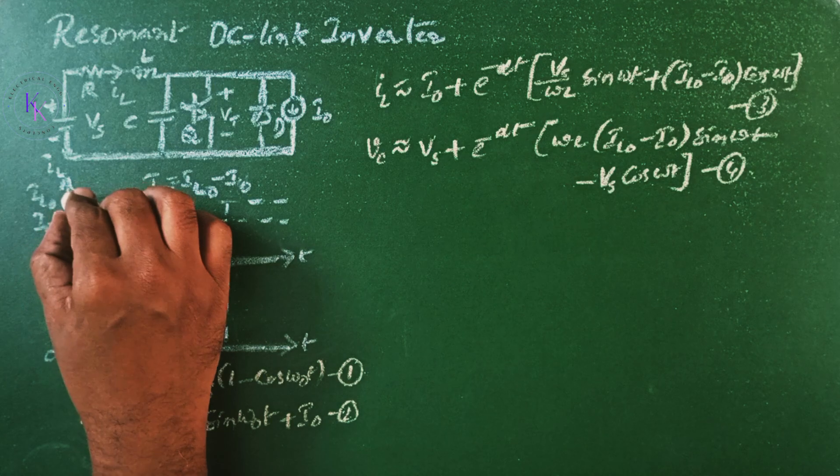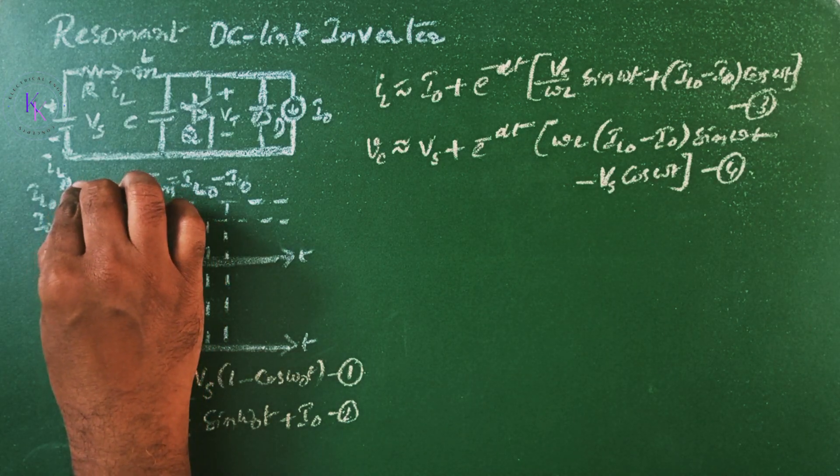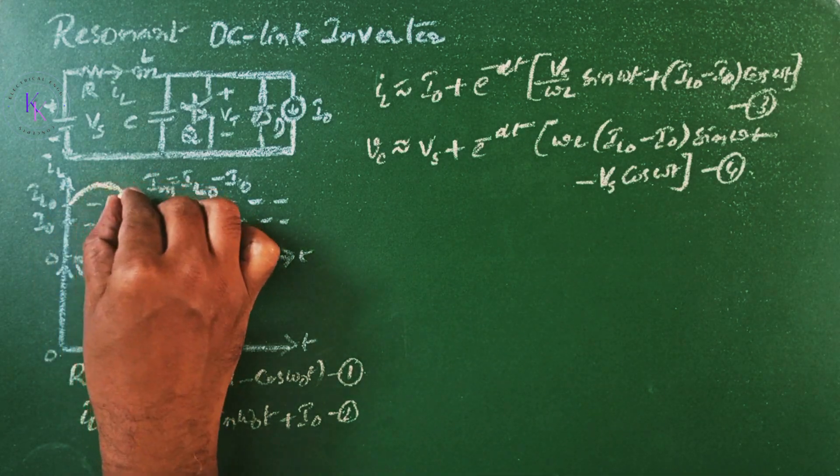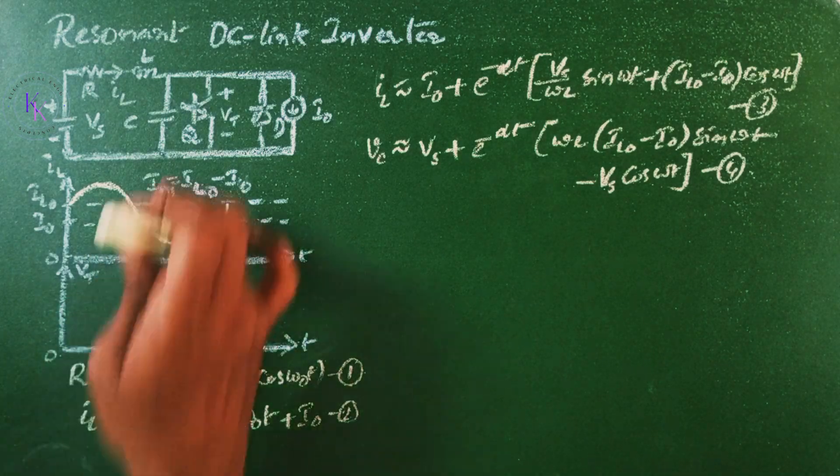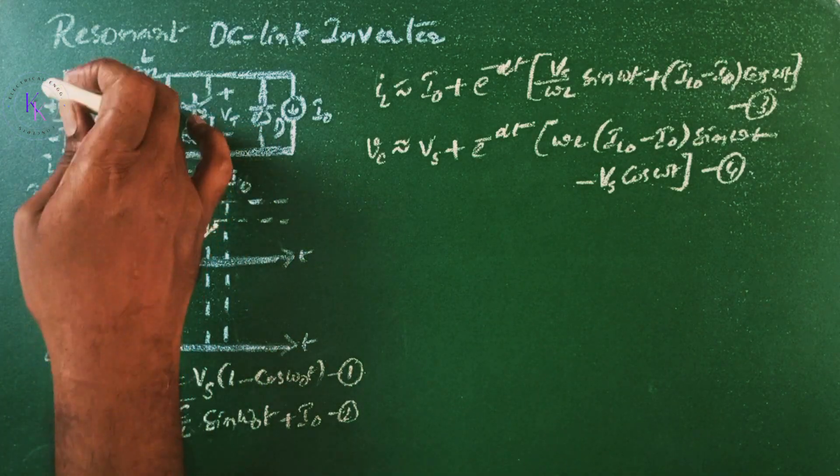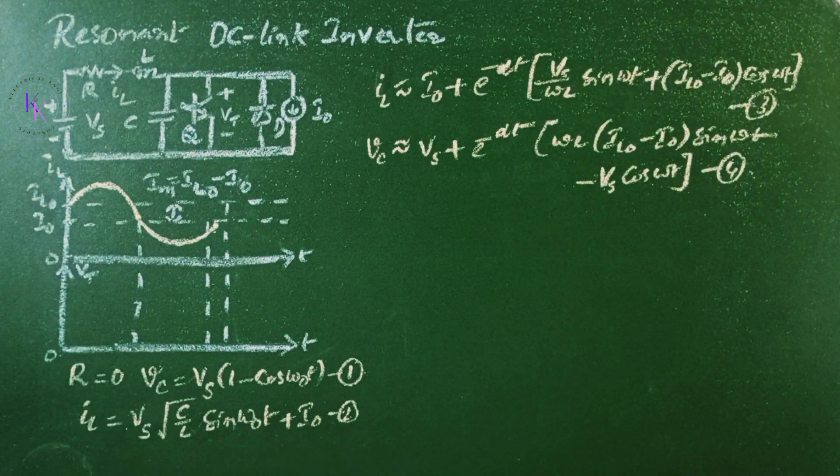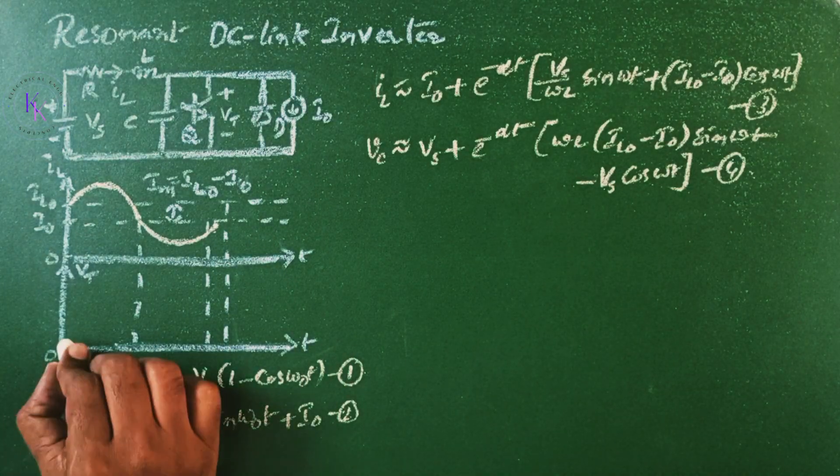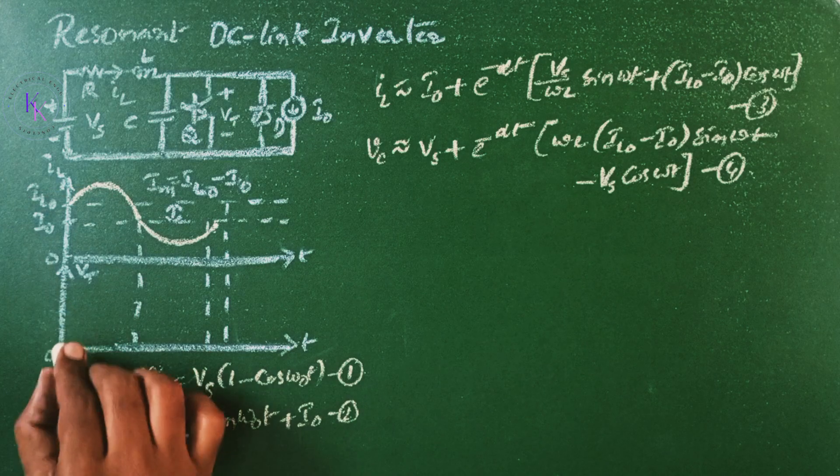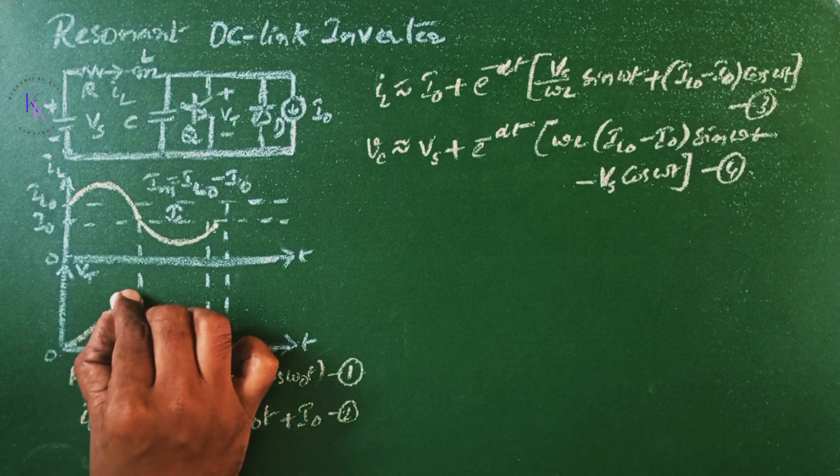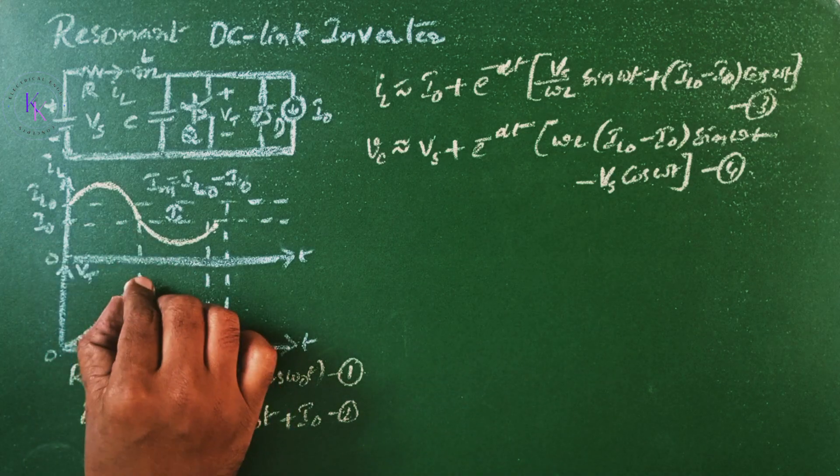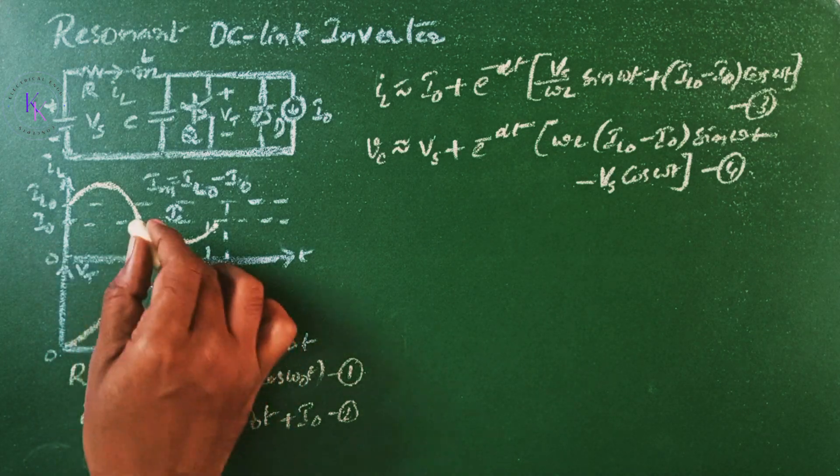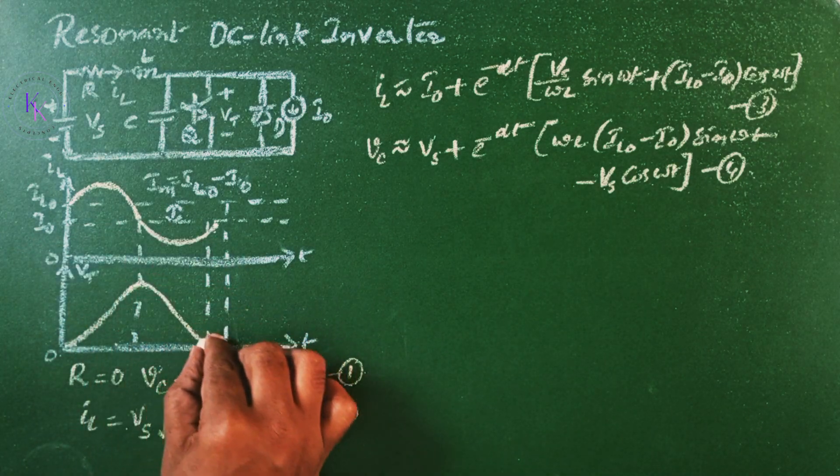Now, the waveforms: the initial current is I0, the voltage across the switch Vt, which is nothing but the voltage across the capacitor also, here we can say Vc. This will start increasing according to the IL and reaches a maximum value when the IL is at I0. And then starts decreasing as the current decreases and becomes zero here.